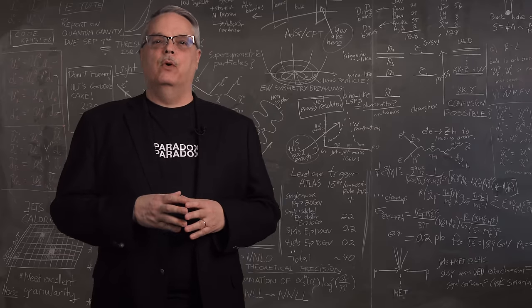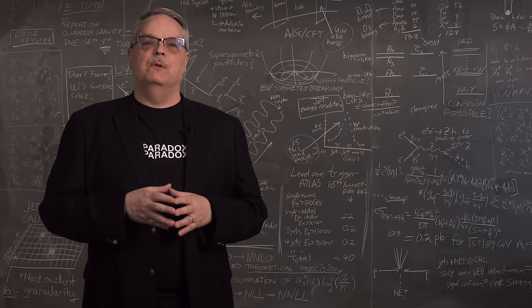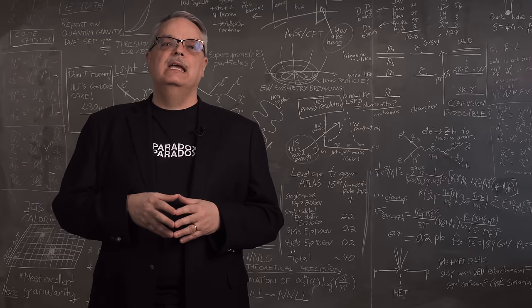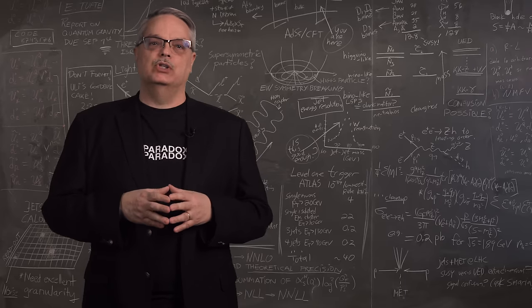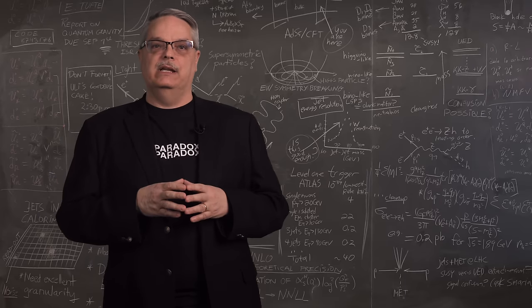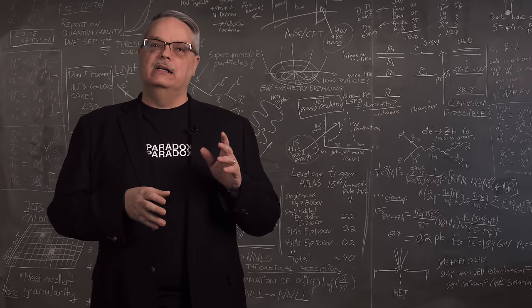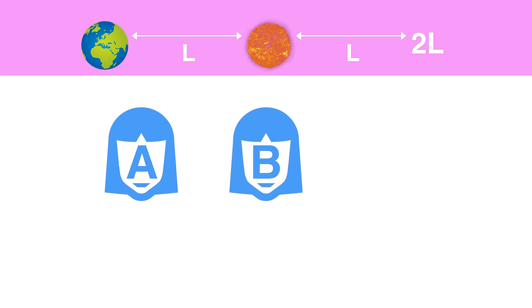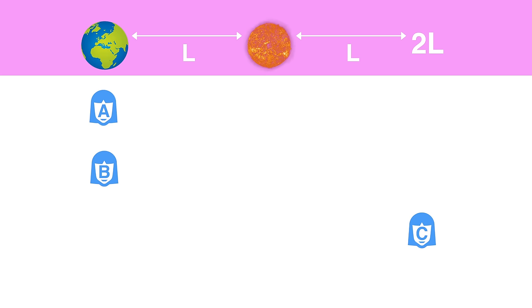To show this point, we can come up with a thought experiment in the spirit of Einstein. Let's imagine three observers in constant motion in which none accelerate. The observers have the unimaginative names A, B and C.